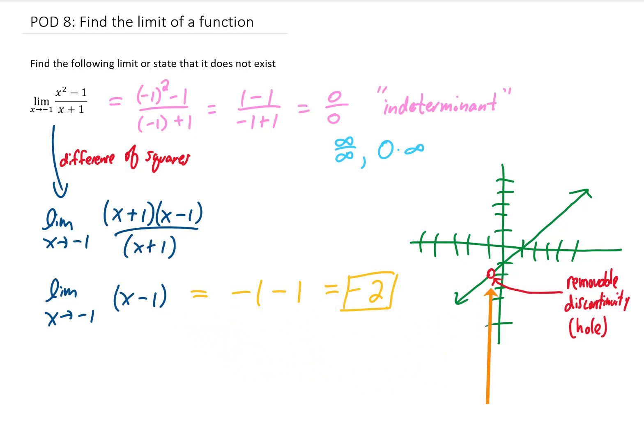Now, as far as limits are concerned, again, if you imagine yourself as an ant walking along this function from the left or from the right, as our x value approaches negative 1, our y value approaches negative 2, and that's the answer that we found right here. Okay, I hope that that explanation helps you out, and I will see you in the next calculus problem of the day.